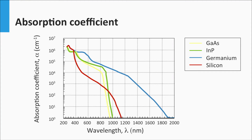Consequently, the absorption coefficient of crystalline silicon in reference to direct band gap materials like gallium arsenide and indium phosphide is significantly lower, as we can see in this plot. Crystalline silicon is indicated by the red line, whereas gallium arsenide and indium phosphide are indicated in yellow and green. In the visible spectrum, crystalline silicon absorbs less, but below 364 nm it absorbs just as much as gallium arsenide and indium phosphide, because silicon has a direct band-to-band transition there as well.